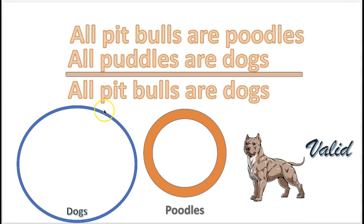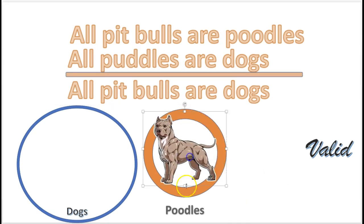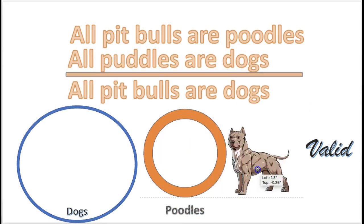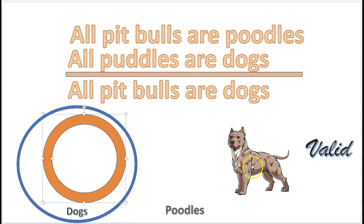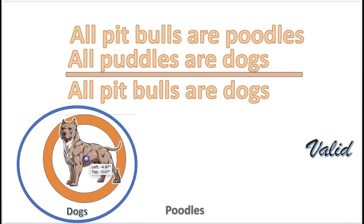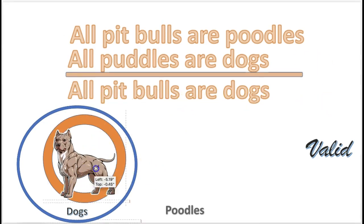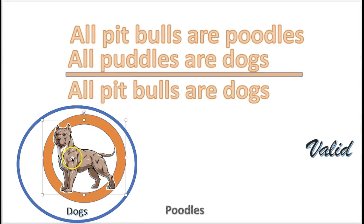For example, if you want to evaluate this argument to see if it's valid: all pit bulls are poodles — put the pit bull in the poodle circle. All poodles are dogs, so all the poodles go in the dog circle. All dogs are poodles, so therefore the conclusion says all pit bulls are dogs. Is that true? Well, all pit bulls are now in the dog circle, so that argument is valid.